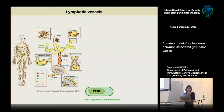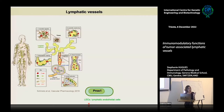Lymphatic endothelial cells are not only lining the lymphatic vessels, but they are also present in the lymph nodes. You have to remember this PROX1 transcription factor, which is very important for lymphatic endothelial cell identity, and that we will be using a lot in our experiments to modulate these lymphatic endothelial cells.